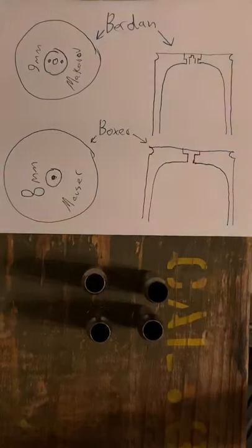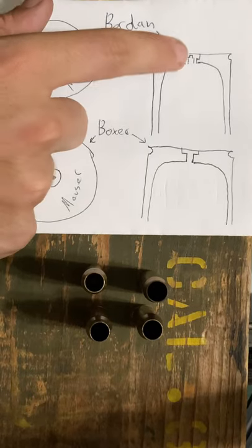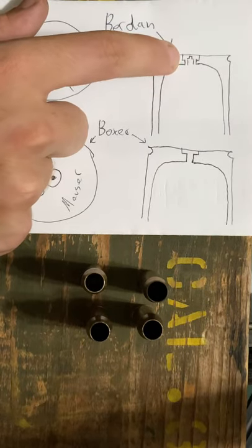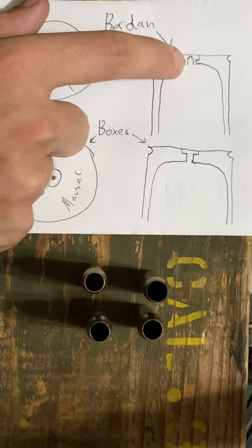This all comes down to the construction of the round, as you can see in this picture. Berdan Primed Ammo up top has an anvil in the center of the round and two flash holes off to either side. So the firing pin hits the primer, which hits that little anvil.